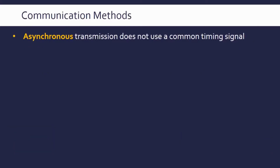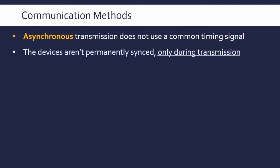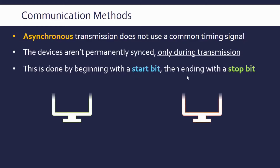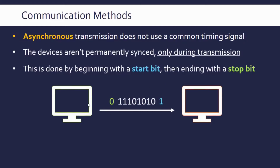Asynchronous, on the other hand, does not use a common timing signal or clock — 'asynchronous' meaning 'not synchronous.' The devices aren't permanently synced up; they're only synced during transmission. This is done using a start bit at the beginning of the message and a stop bit at the end. So the sender adds a start bit to the front and a stop bit to the end. Usually one is the start bit and zero is the stop bit. The actual message must be a set length — they must have agreed that a byte will be sent, so the receiver can count the bits, knowing it will receive 10 bits in total including the start and stop bits.